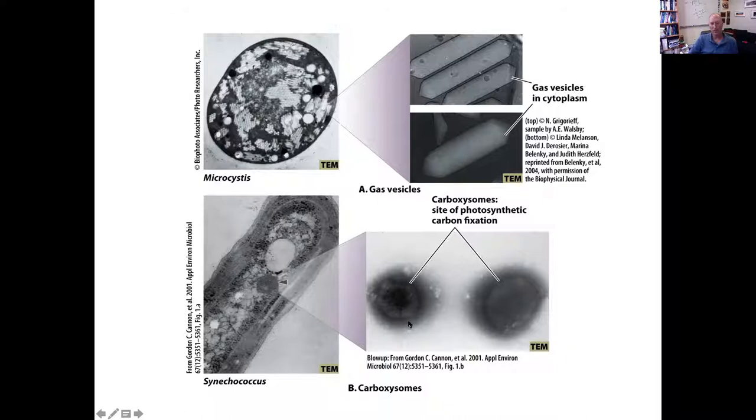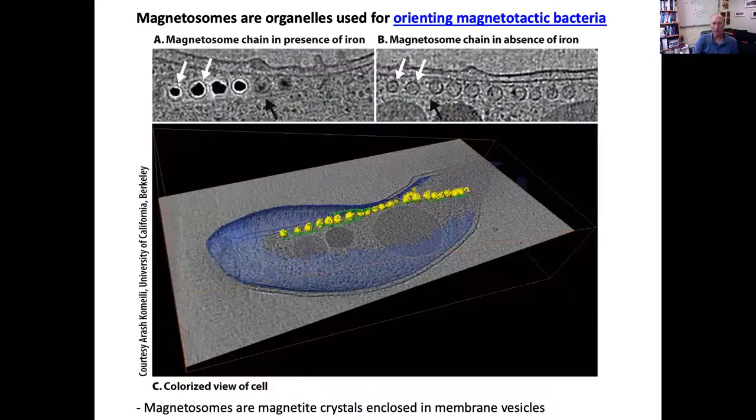It's also a photosynthetic bacteria. This is a different organelle, the carboxysomes. Now these are basically protein shells making these organelles, not membrane-enclosed organelles. So this is for carbon fixation. This is for buoyancy control. Again, only certain bacteria have these.